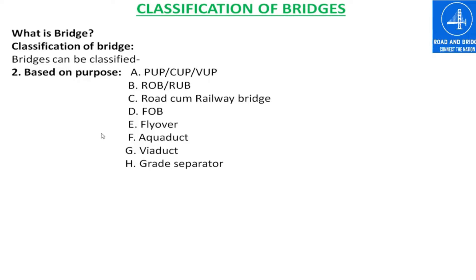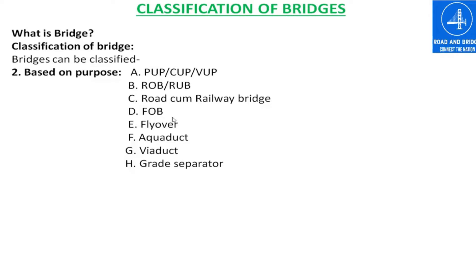Based on purpose, the bridge can be classified as: VUP (Vehicle Underpass), ROB (Road Over Bridge), Road-cum-Railway Bridge, FOB (Foot Over Bridge), Flyover, Aqueduct, Viaduct, and Grade Separator.